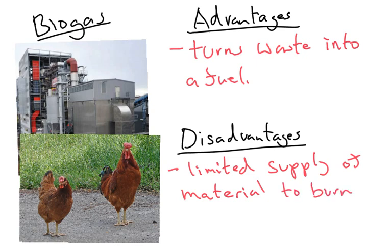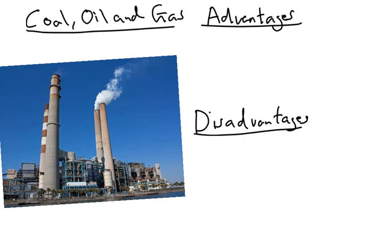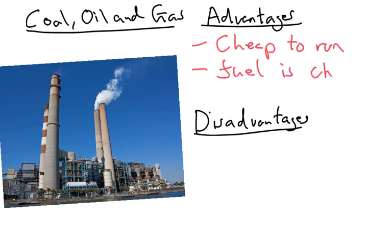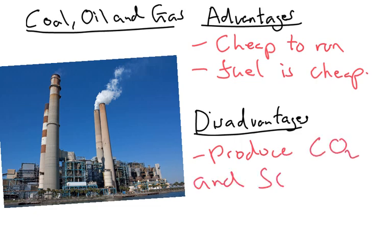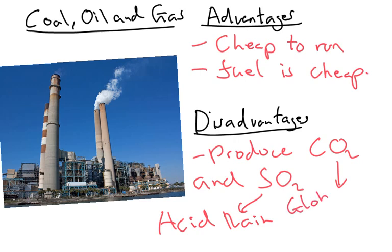Coal, oil and gas. The advantages of coal, oil and gas is that they are cheap to run and the fuel is cheap. Disadvantages: they produce carbon dioxide and sulphur dioxide. Sulphur dioxide can lead to acid rain, whereas CO2 leads to global warming.